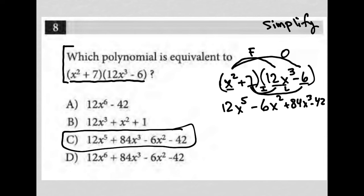And as you can see, let's move this here and move that there so we have things in the right order. So 12x to the fifth plus 84x cubed minus 6x squared minus 42 is exactly what I have for answer choice C.